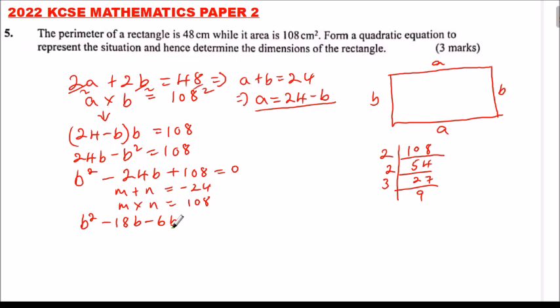We factor out b here in these two, so we will be left with b minus 18, close the bracket. Here we factor out minus 6, and we will be left with b minus 18, equals 0.